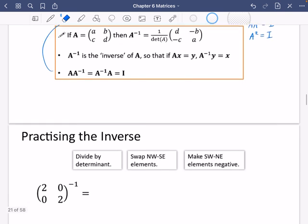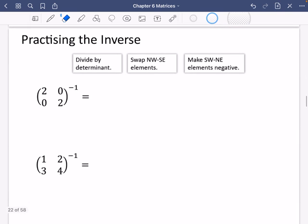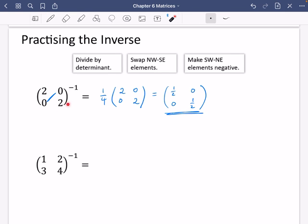So let's actually just have a bit of a practice of finding the inverse of some of these matrices that we've got here. So to find the inverse of this matrix, the first step is to divide by the determinant. So the determinant of this is just 2 times 2 minus 0, so that's just a quarter. And then we swap the northwest and southeast elements. Well, when you swap those over, nothing happens. And then you negate these ones. And also there, nothing is going to happen. So you could leave it in this form if you wanted to, or you could multiply everything inside by a quarter, so you just get (1/2, 0; 0, 1/2). So this is the answer to the inverse of this matrix.